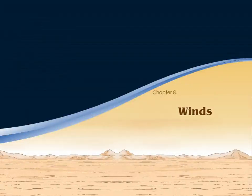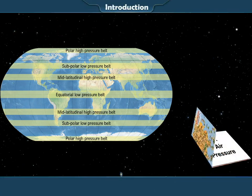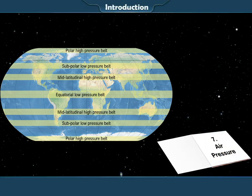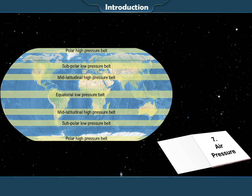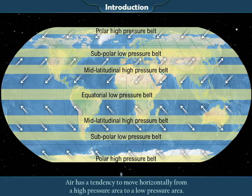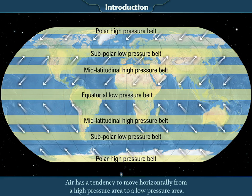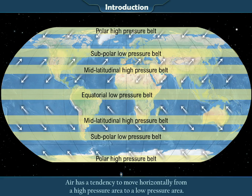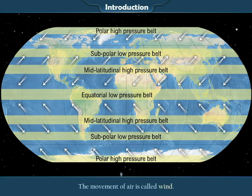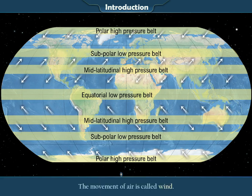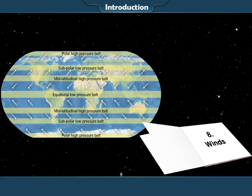Chapter 8: Winds. Introduction. Dear Students, we have already studied air pressure. Some regions on Earth experience high air pressure, and some other regions experience low air pressure. Air has a tendency to move horizontally from a high-pressure area to a low-pressure area. The movement of air is called wind. In this lesson, we are going to study wind in detail.